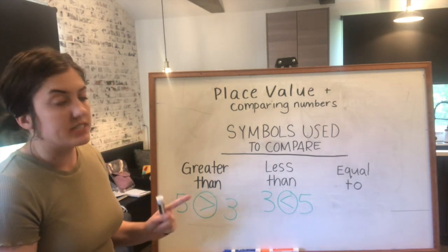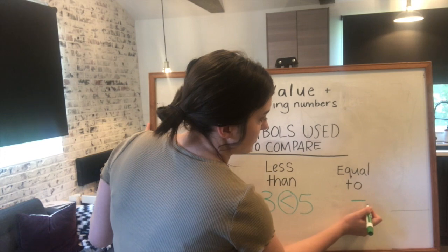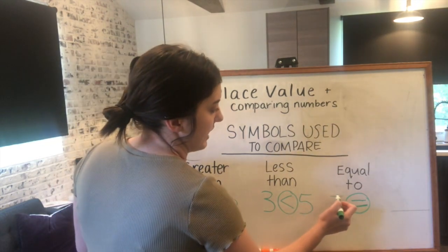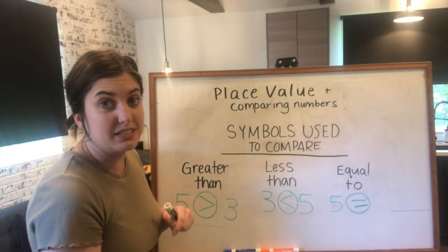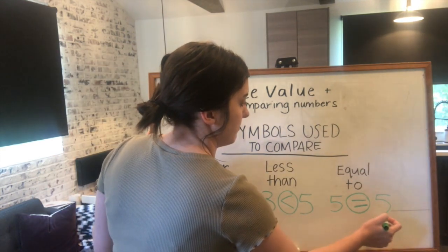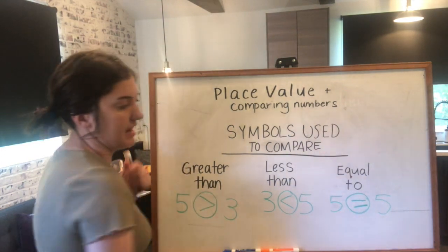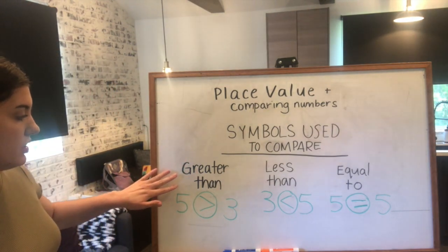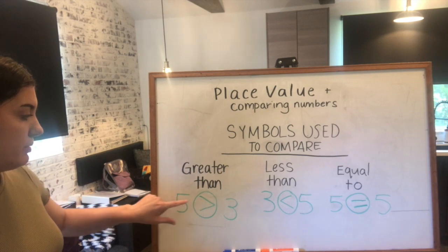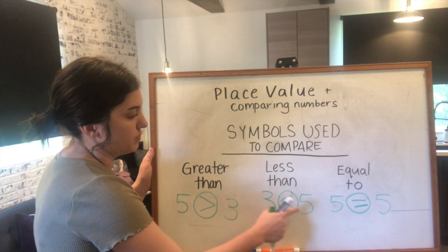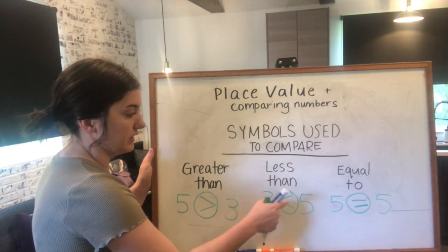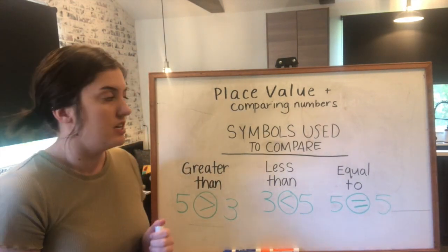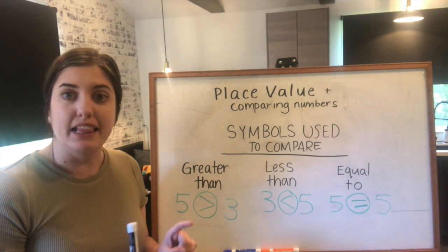Greater than reads: five is greater than three. Less than reads: three is less than five. Now let's write an equal statement — the equal sign is those two lines, placed inside our circle. Five is equal to five, because they are the same number with the same value. So to recap: greater than — alligator opens toward the bigger number; less than — alligator points away from the smaller number; equal to — both sides must be the same.